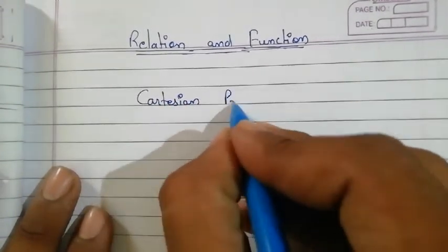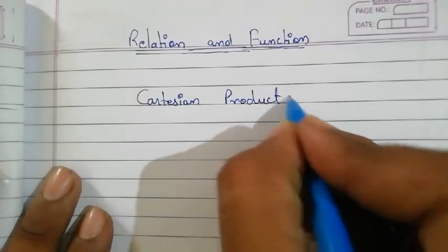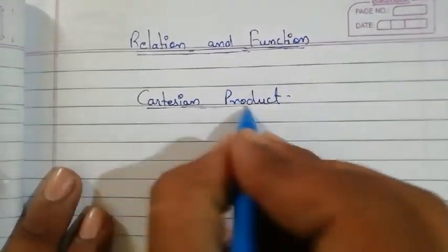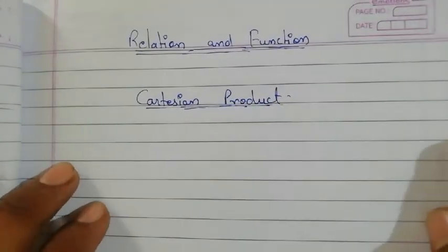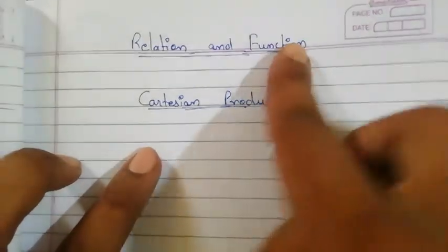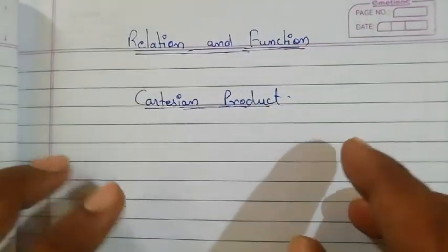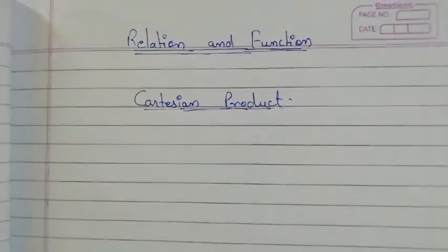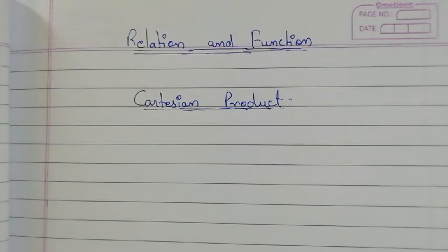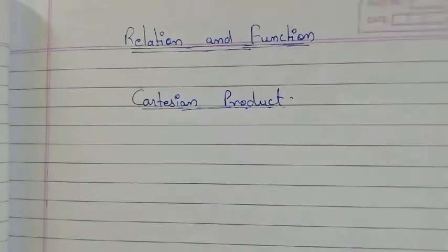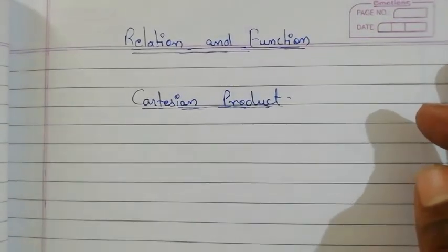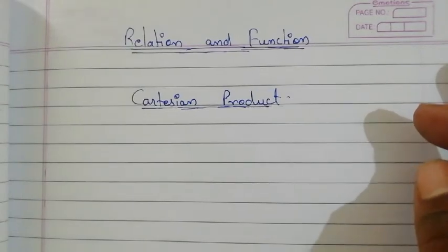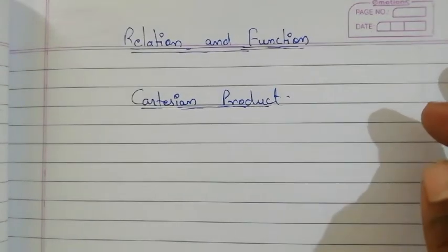Cartesian product is a topic left after the discussion of Chapter 1 (Sets), needed to understand Relations and Functions. So in this video, we will cover the Cartesian product only. After that, we will discuss Relations and then a special type of relation called Function.